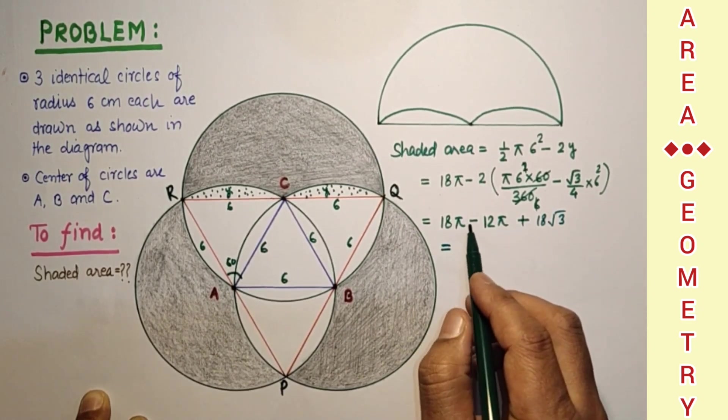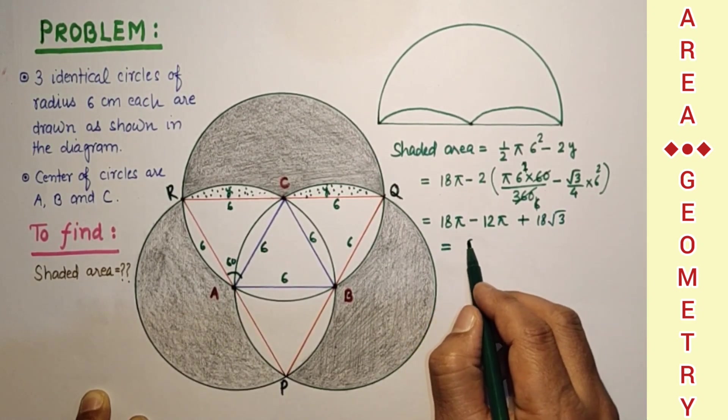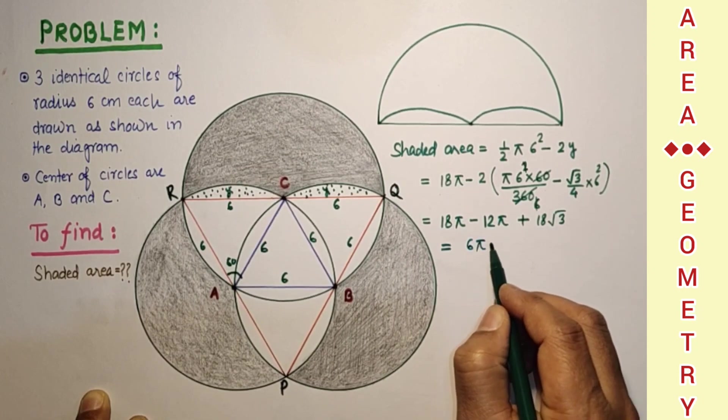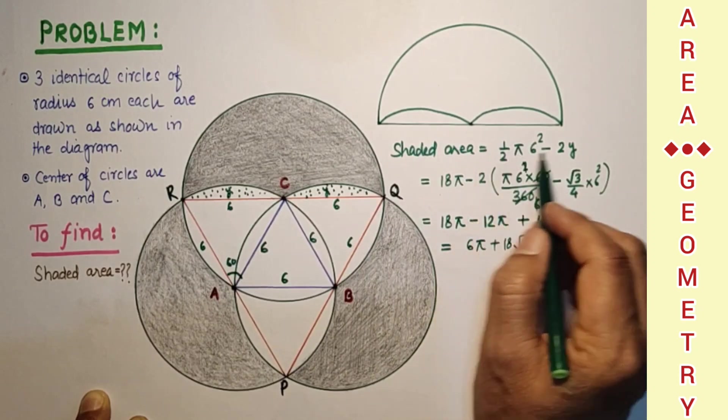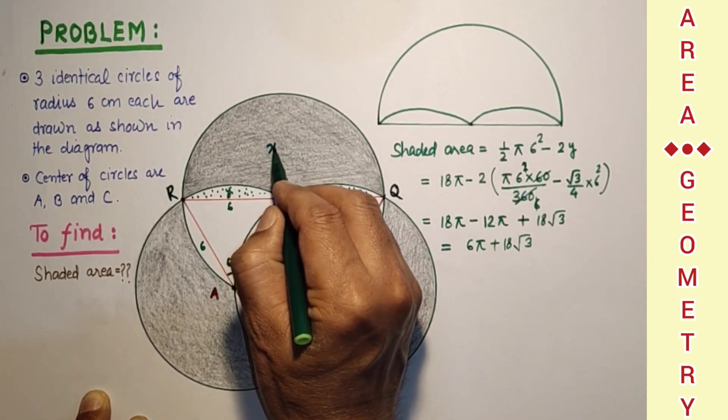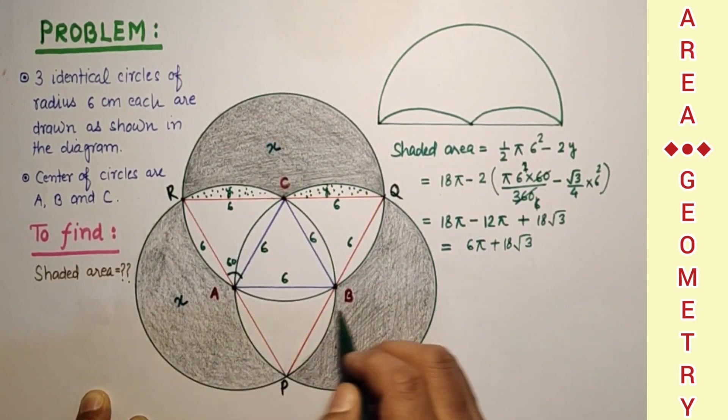So that is coming 18 pi minus 12 pi is 6 pi plus 18 root 3. This shaded area is this. If this is x, so this will also be x. And this is x. All the three shaded parts will be.